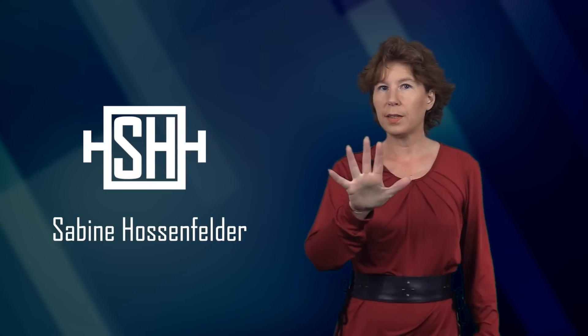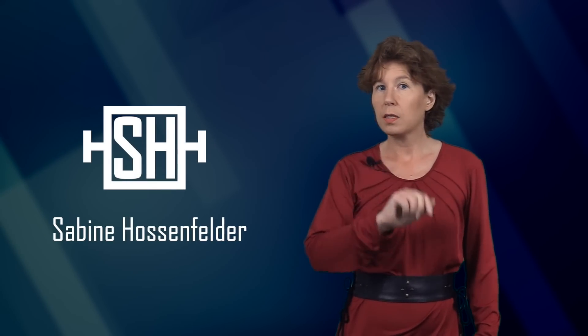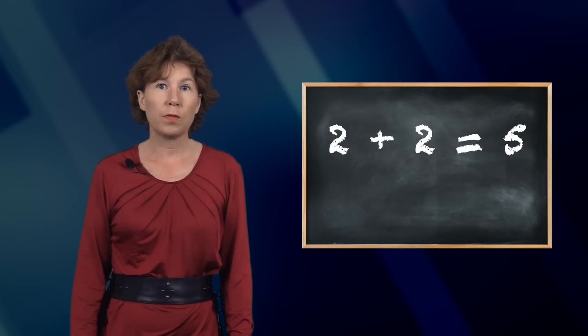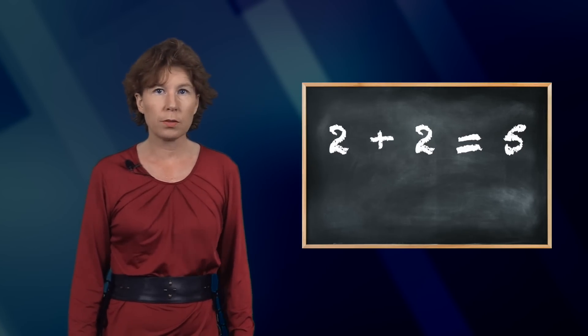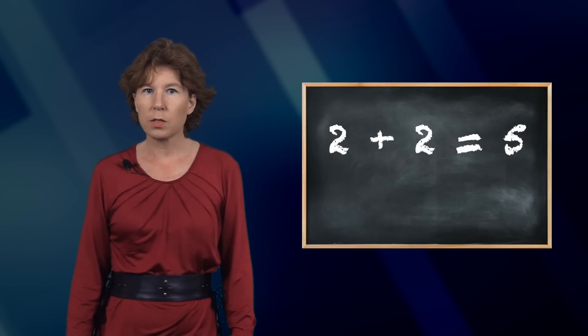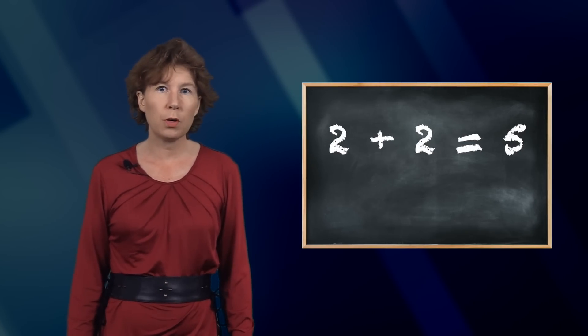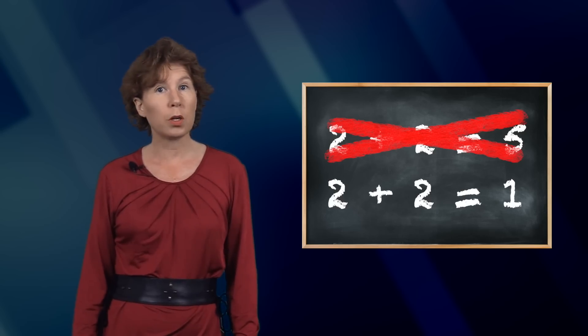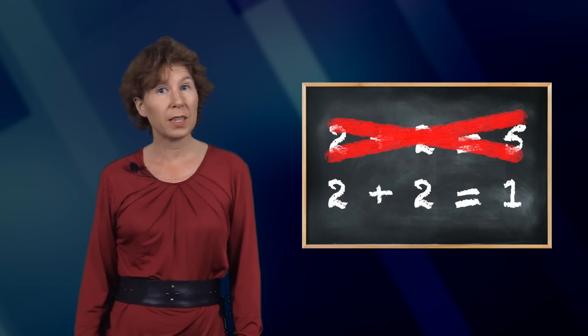Two plus two makes five is the paradigmatic example of an obvious falsehood — a falsehood that everybody knows to be false. Because two plus two is equal to one, right? At the end of this video, you'll know what I'm talking about.